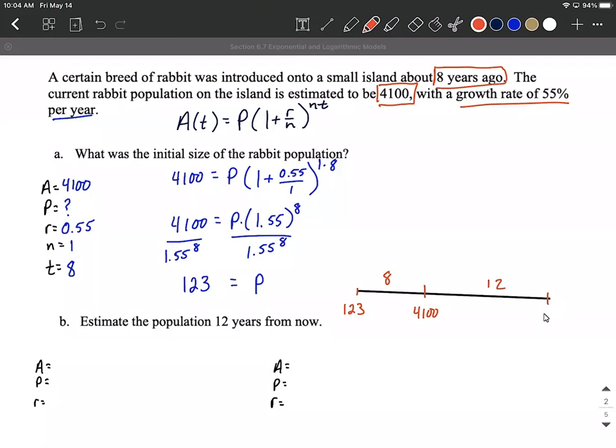So the two different calculations we could make on this, and that doesn't look like a horizontal line, go with it, are either we can start with today's population. So we start with 4100. And our rate hasn't changed. It's 0.55.